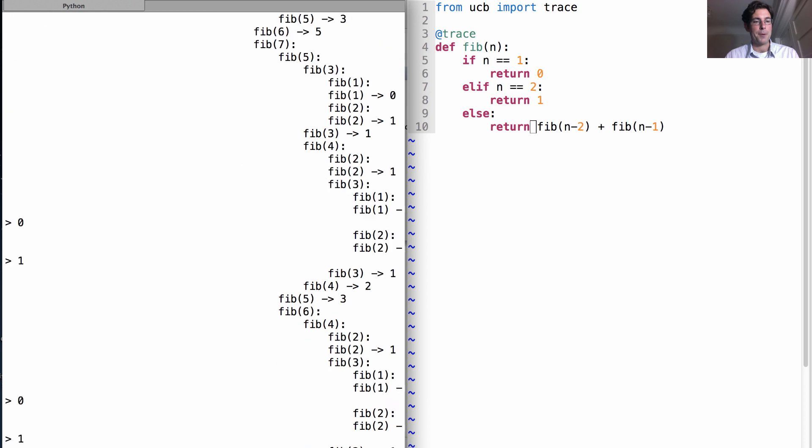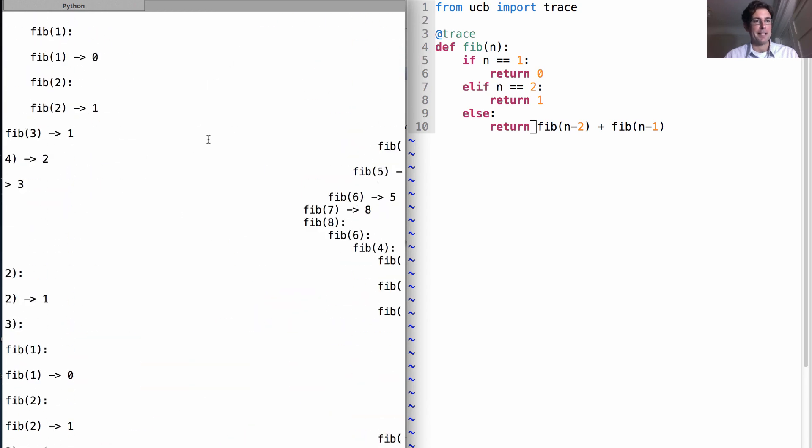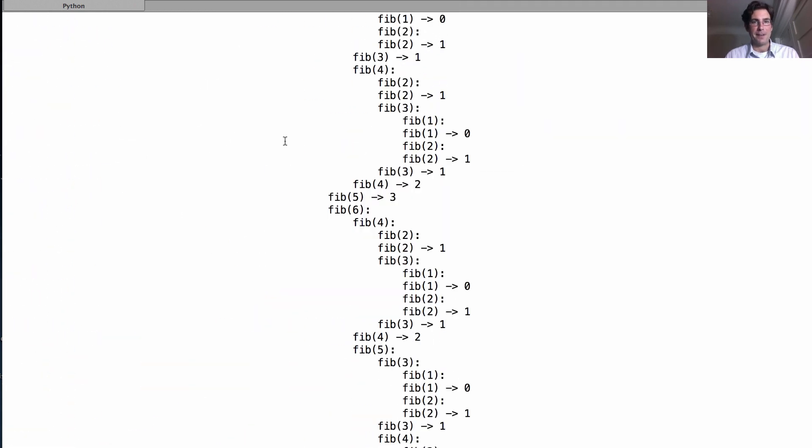And when I call fib(20), well that just goes on and on and on, doesn't it? Some of these lines are so long that they're even wrapping around.